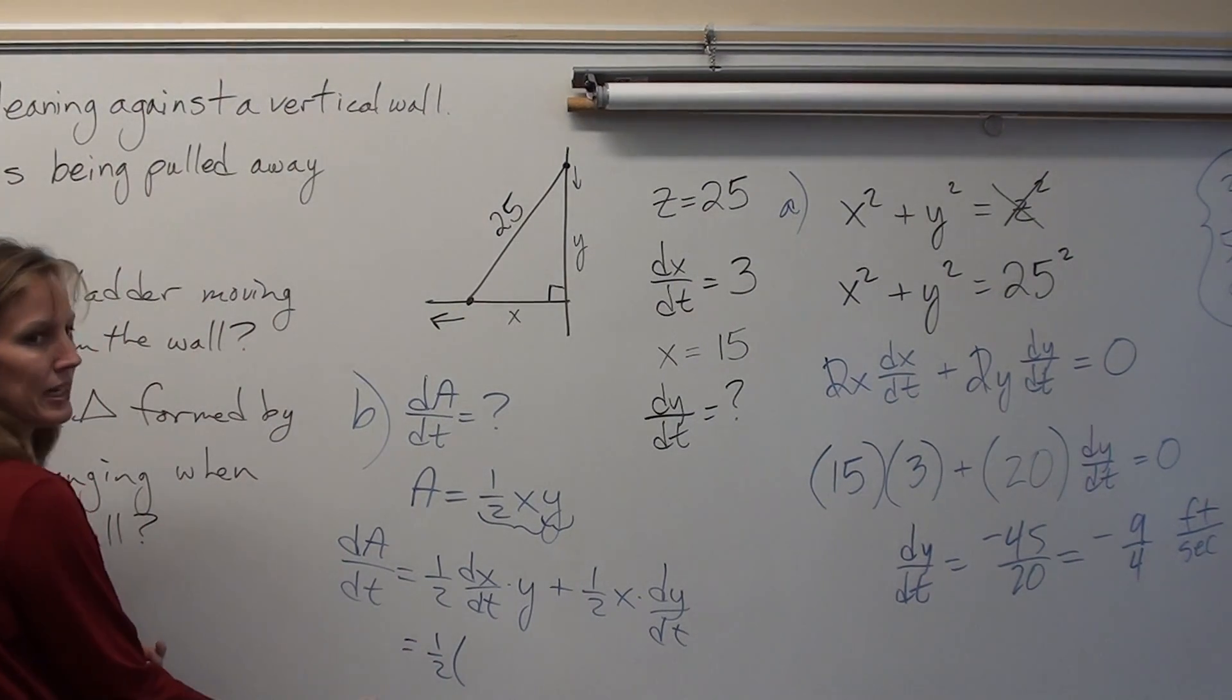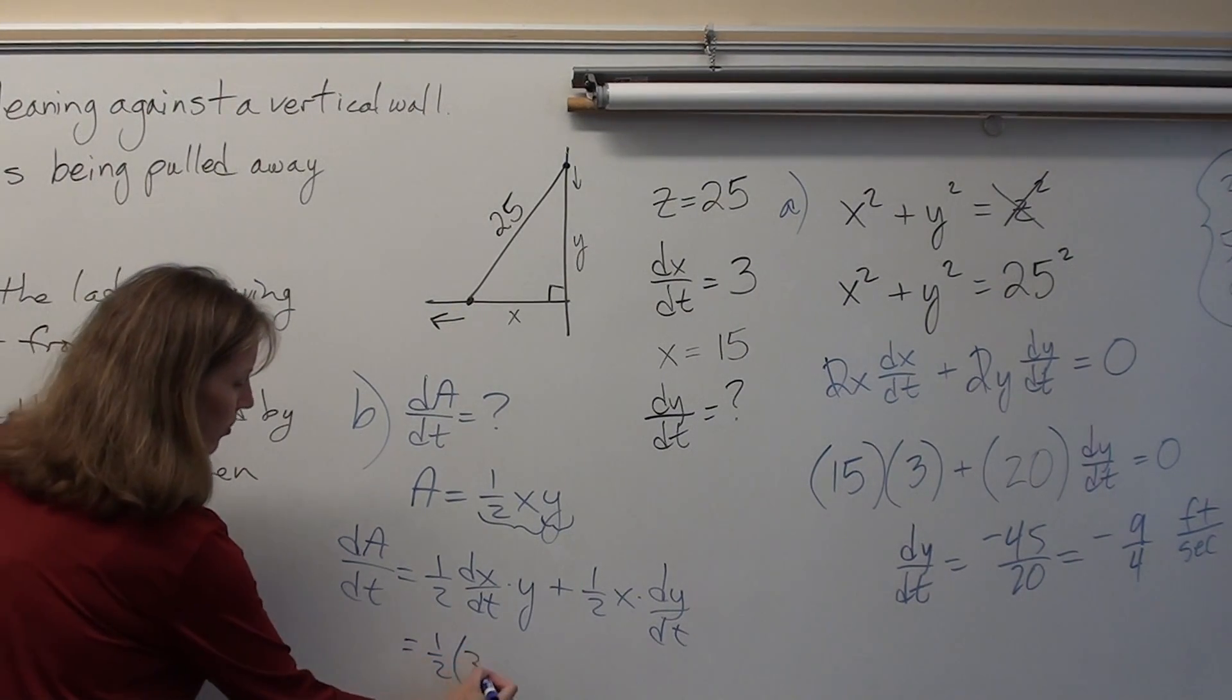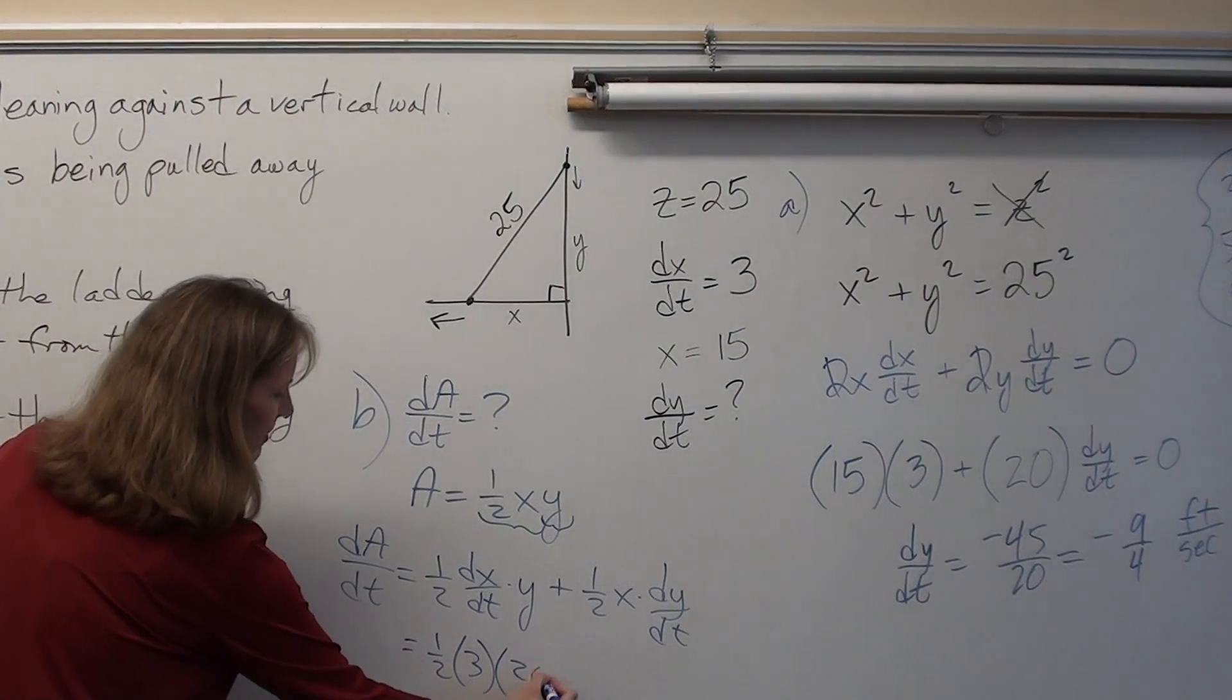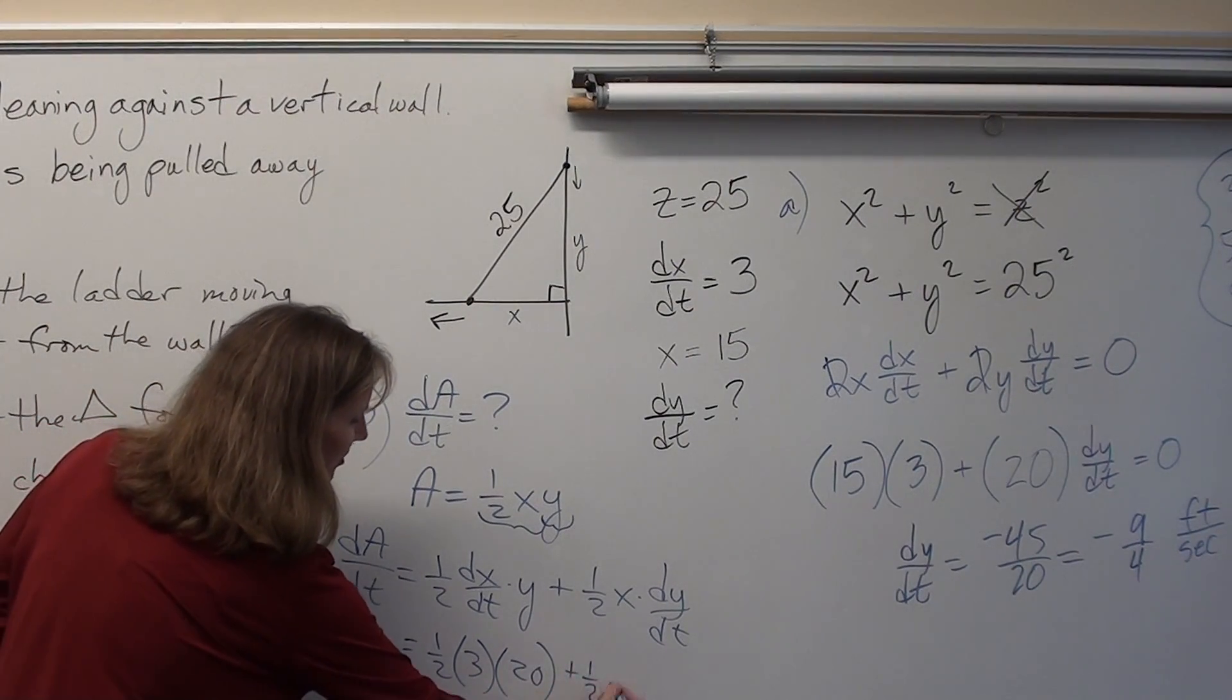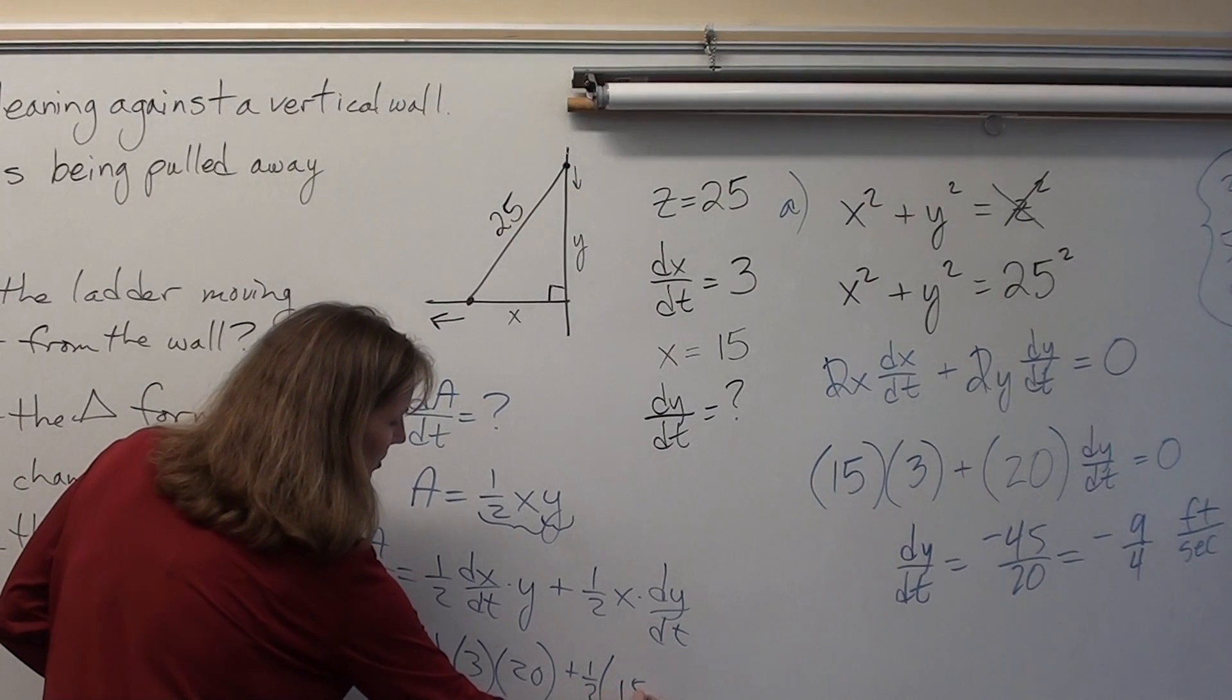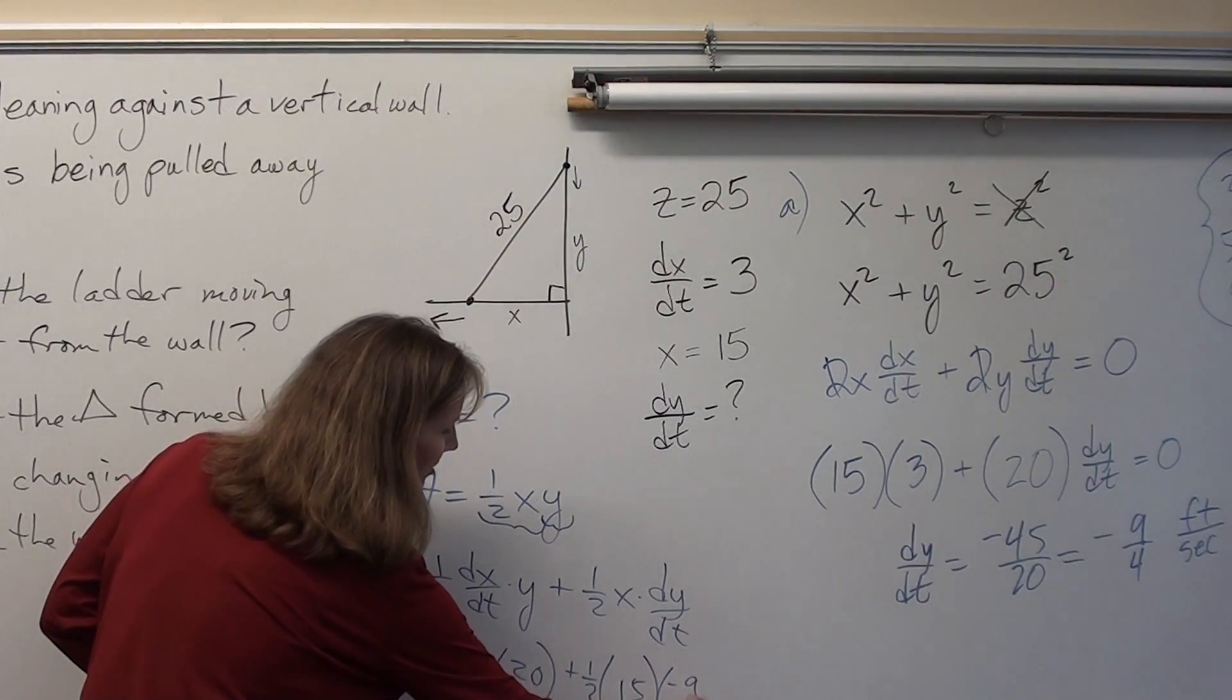1/2. What's dx/dt? 3. What's y? 20. 20 plus 1/2. What's x? 15. 15. What's dy/dt? Negative 9 over 4. Negative 9 fourths.